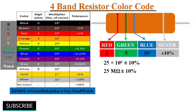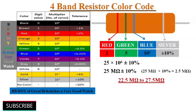The tolerance value is ±10%, so the resistance value may vary ±2.5 megaohms from its actual value of 25 megaohms. Therefore the resistance value of this resistor is between 22.5 megaohms and 27.5 megaohms. In this way we can find the resistance value of a resistor using color bands.